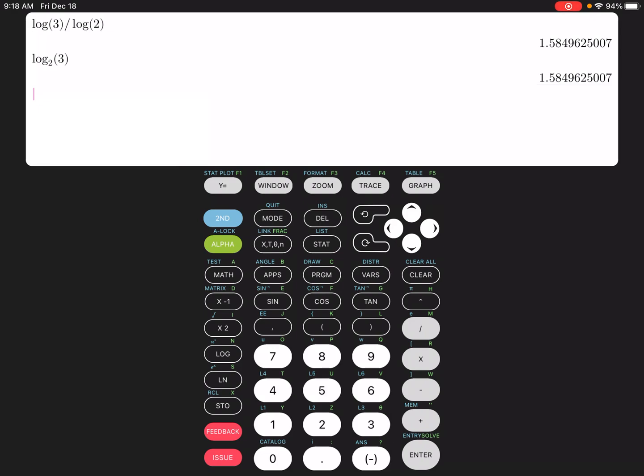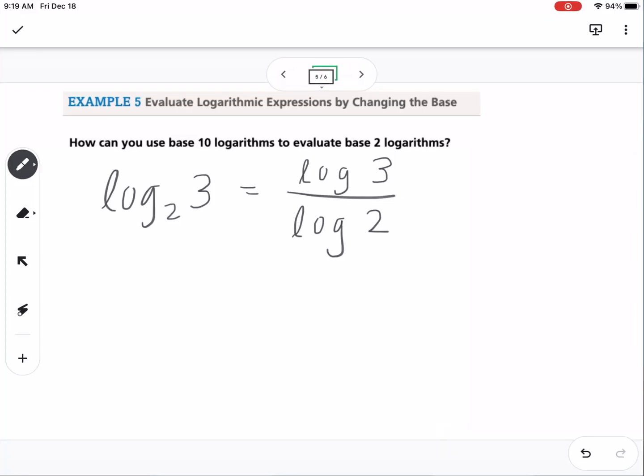The other thing you could do is you could do natural log of 3 divided by natural log of 2, and that also gives you the same value. So when you're changing the base, you probably want to change it either to log or natural log. That's going to be the easiest.